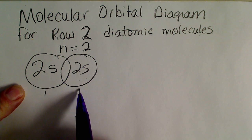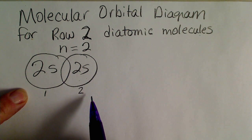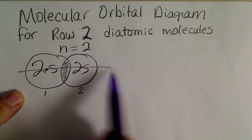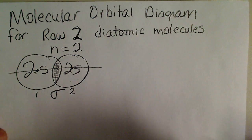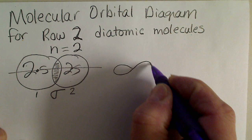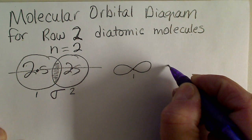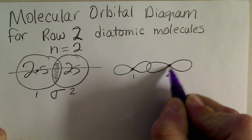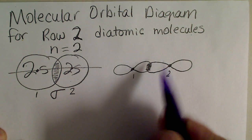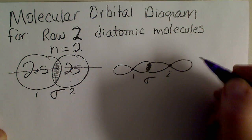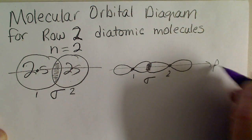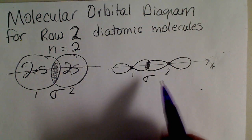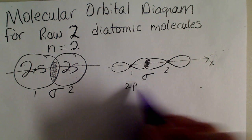Atom number one and atom number two each have a 2s orbital available. We would have overlap on the axis that connects the nuclei, so that is sigma overlap. The p orbitals also overlap: two of the p orbitals along the x direction will overlap in the sigma fashion, giving us sigma overlap from the two p orbitals.